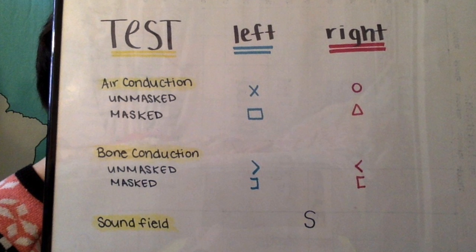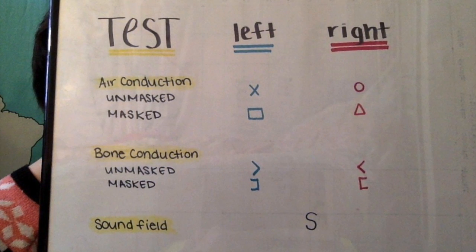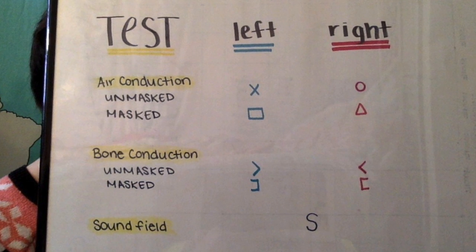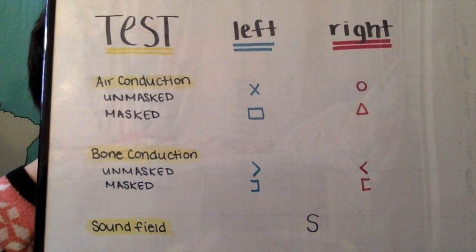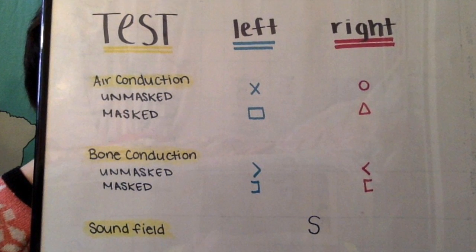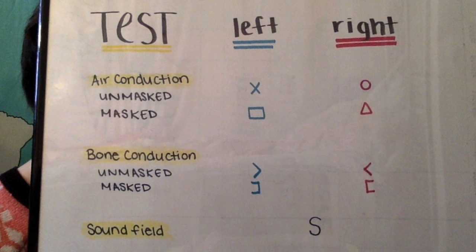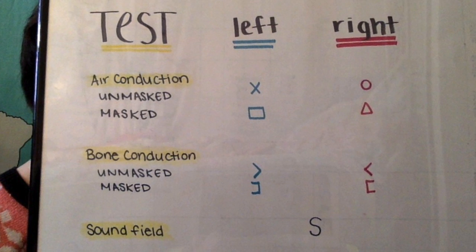Bone conduction tests use an oscillator that's placed behind the ear and transmits the sound directly to the inner ear. The symbols are posted there. For younger children who can't sit with headphones or the oscillator, sounds are played over a speaker into the booth and the S symbol signifies this on the audiogram.